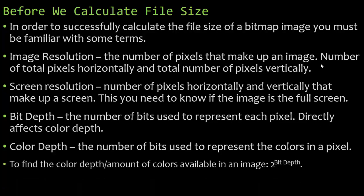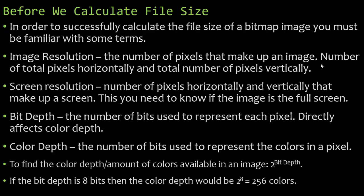To find the color depth, you take two to the power of the bit depth. So if you know the bit depth, you can find out the color depth, which is the amount of colors available. If the bit depth is eight bits, then the color depth would be two to the power of eight, giving you 256 colors available to use in that bitmap image.